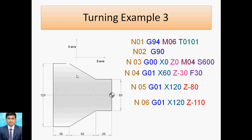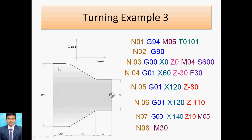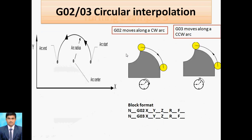Now the tool moves away from the workpiece. Block N07: G00 rapid traverse, X140 because 120 diameter plus offset 20 gives 140, and Z positive 10. Then M05 spindle stop and M30 program end. This is the third example.